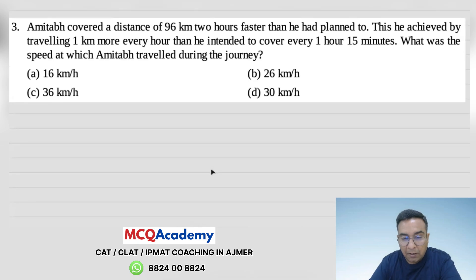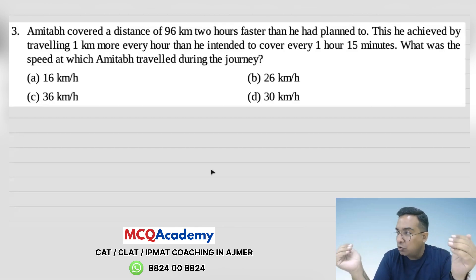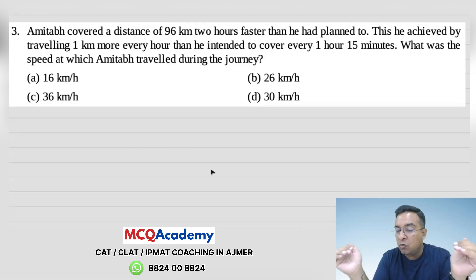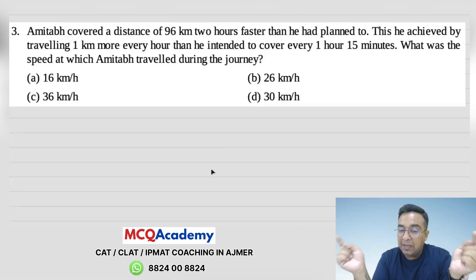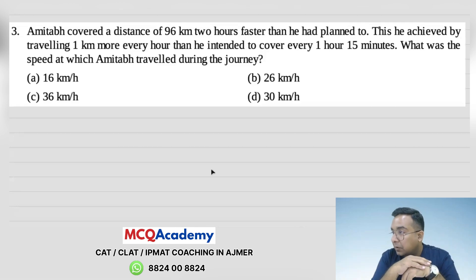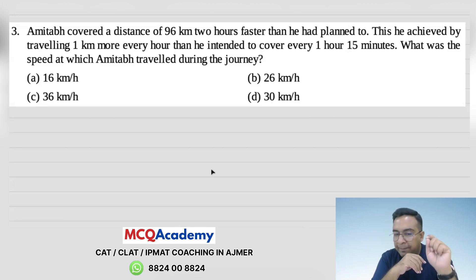Question number 3: Amitabh covered a distance of 96 km, 2 hours faster than he planned. He achieved this by traveling 1 km more every hour than he intended to cover every 1 hour 15 minutes. What was the speed at which Amitabh traveled during the journey? Same format — the same distance is traveled at different speeds, causing a 2-hour difference in time.